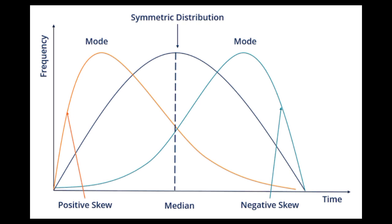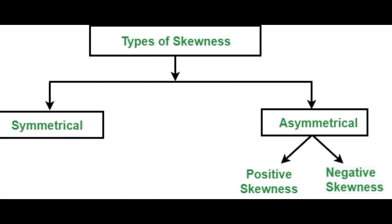A distribution can have right, left, or zero skewness. Right means positive and left means negative. So friends, here I will tell you the types of skewness. We have two types: first is symmetrical skewness and second is asymmetrical.